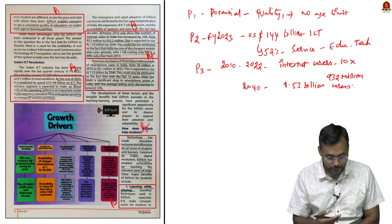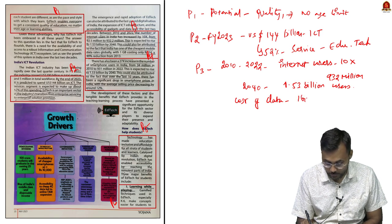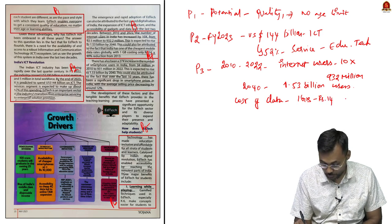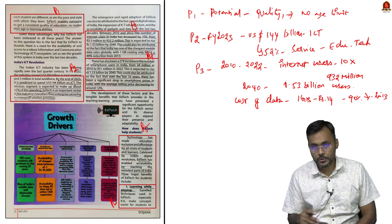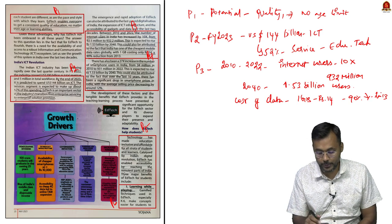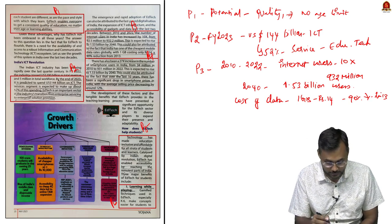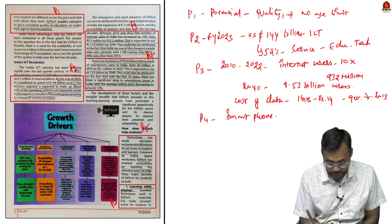One of the primary reasons for high internet penetration is the cost of data. Currently 1 GB costs around 14 rupees, which represents a 90 percentage reduction from 2013 prices. This low cost is the primary reason why internet penetration is very high in India.